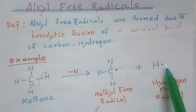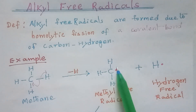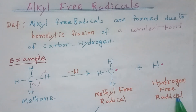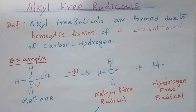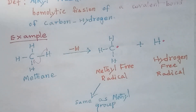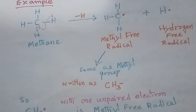Then a hydrogen atom is eliminated. The hydrogen atom has one electron, and the CH3 group will also have one electron. This is called the methyl free radical, and the hydrogen atom with one electron is called the hydrogen free radical. This methyl free radical is the same as the methyl group we learned about in the previous lecture.